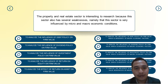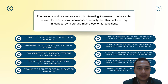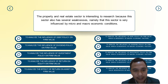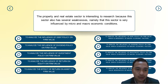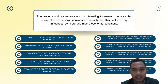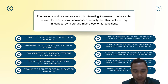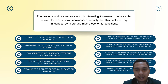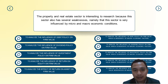The first purpose is to analyze the influence of debt policy on firm value. Second, to analyze the influence of dividend policy on firm value. Third, to analyze the influence of investment policy on firm value. Fourth, to analyze the influence of return on equity on firm value. Fifth, to analyze the effect of return on asset on firm value. Sixth, to analyze the influence of debt policy on firm value moderated by macroeconomic factors. Seventh, the influence of dividend policy on firm value moderated by macroeconomic factors. Eighth, the influence of investment policy on firm value moderated by macroeconomic factors. Ninth, the influence of return on equity on firm value moderated by macroeconomic factors. Tenth, the influence of return on asset on firm value moderated by macroeconomic factors.